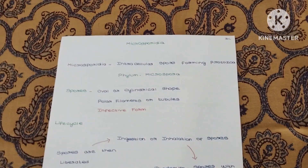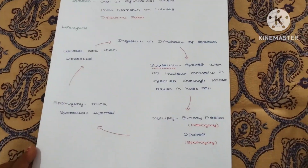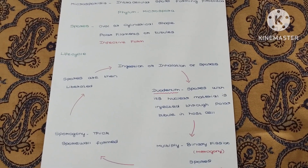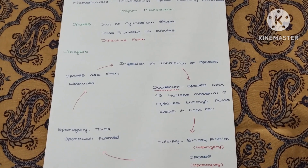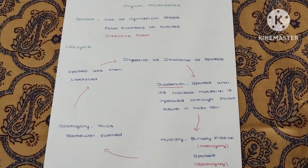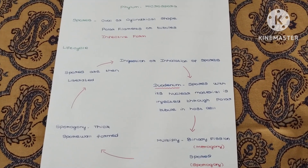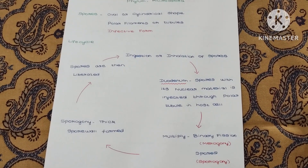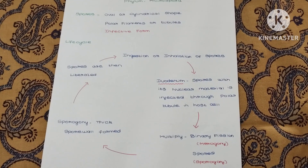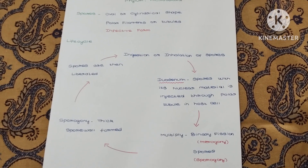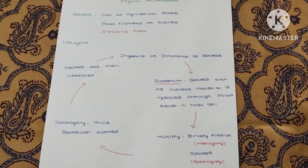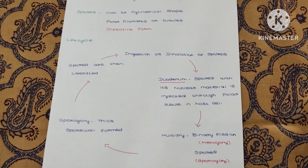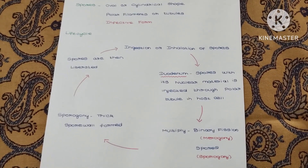How does it enter human beings? First, there is ingestion or inhalation of spores. These spores enter into the duodenum, where the nuclear material is injected through the polar tubule — also called the polar tubule — directly into the host cell.